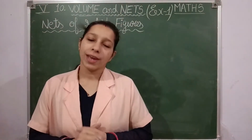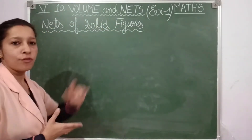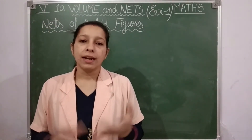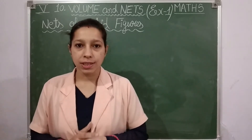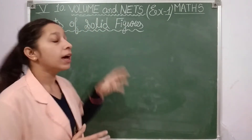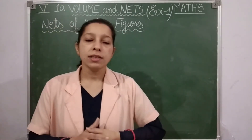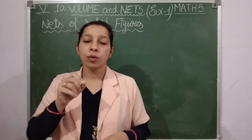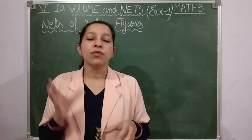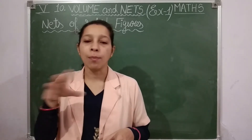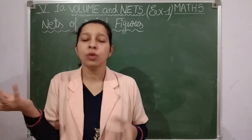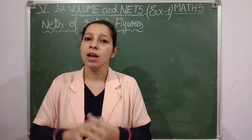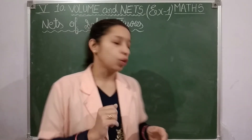We have covered volume, and now we are going to look at nets of solid figures. Solid figures like cube, cuboid, cone, and cylinder have three dimensions. A net is a two-dimensional figure for any solid shape — you can draw it on paper. When you join that net, you get the solid figure.